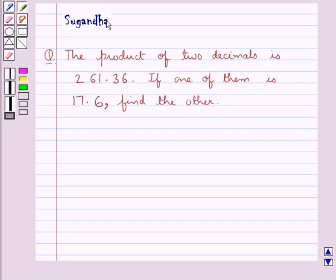Hello and welcome to the session. In this session we discuss the following question which says the product of two decimals is 261.36. If one of them is 17.6, find the other.